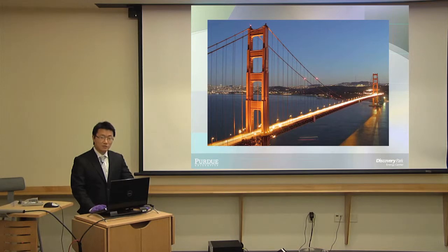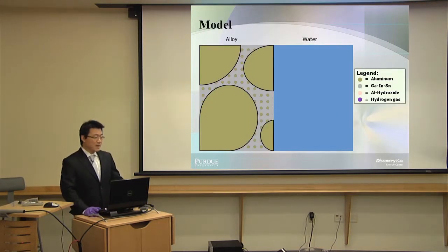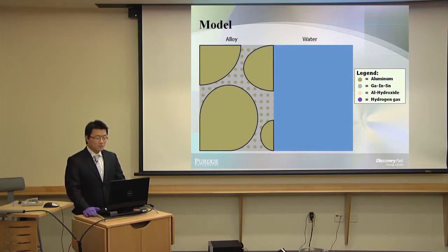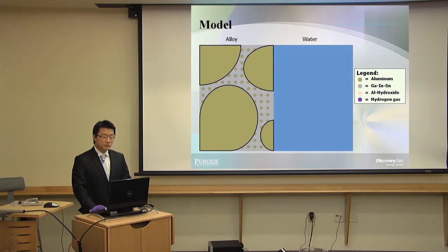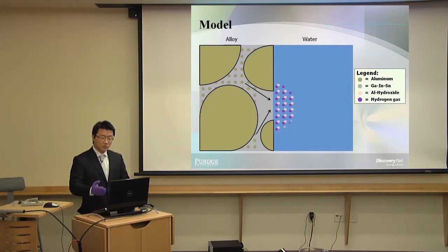Let's look into this process in more detail. The gold region represents aluminum, the gray color represents the liquid metal — gallium, indium, and tin — and the blue region represents the water. These aluminum particles flowing in the liquid metal near the surface will react with water and produce hydrogen. To fill in the gap, the aluminum particles further apart from the surface will move toward the surface and also continue the reaction.